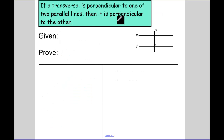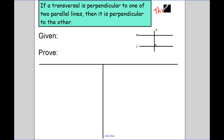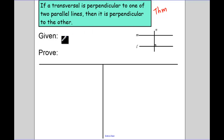If a transversal is perpendicular to one of two parallel lines, then it's perpendicular to the other. This is a theorem that we're actually going to prove. Remember, when we have a given and a proof with an if-then statement, the given comes from the if part.